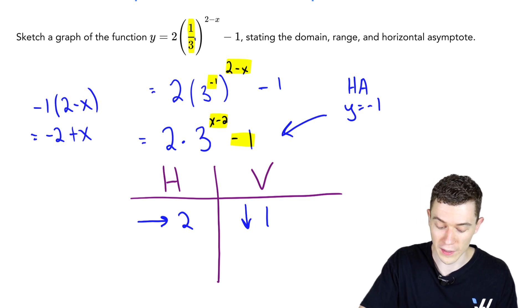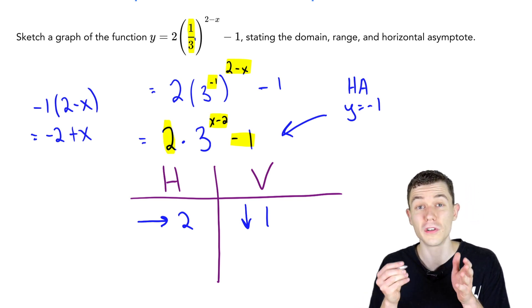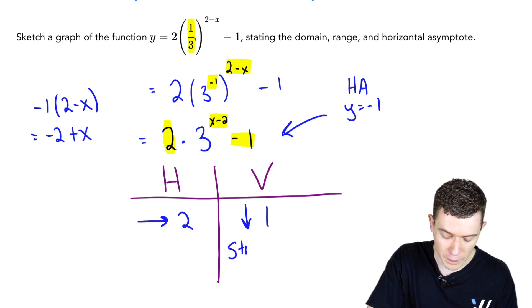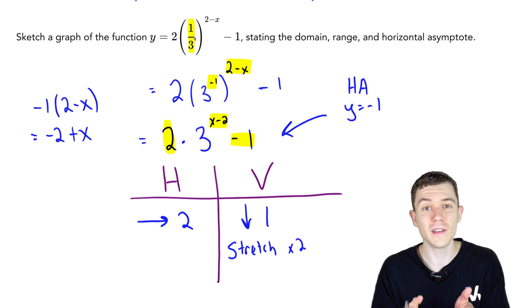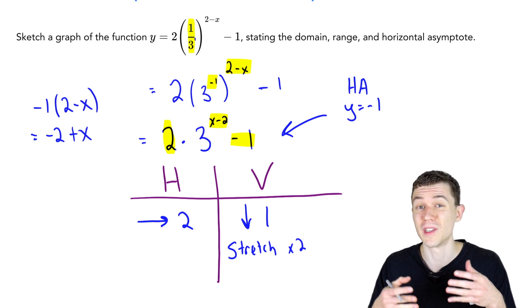The only other thing to discuss is this two out front. That's a vertical stretch, a vertical expansion by a factor of two. Other than that, it looks like the graph of three to the x, which looks like the graph of most exponential functions.